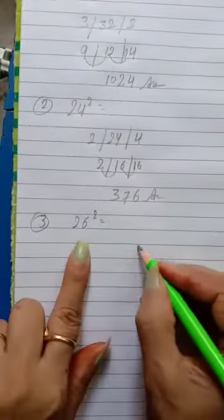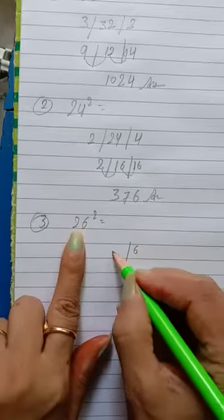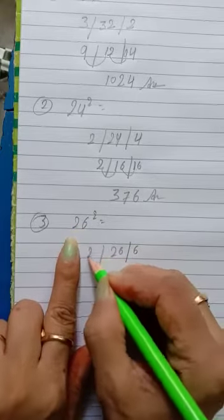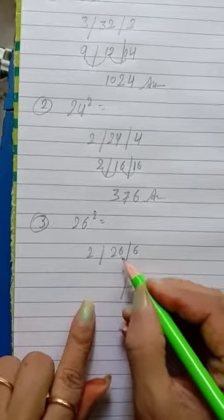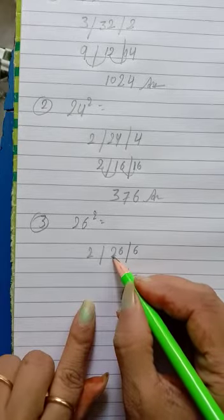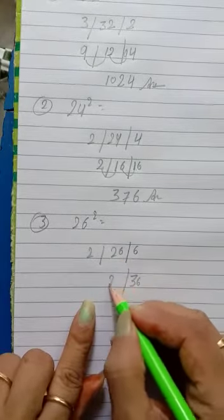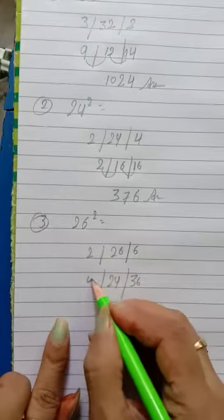First we have to separate 6, then 26 both digits, then 2. Now 6 times 6 is 36, then 6 times 2 is 12, 2 times 6 is 12, 12 plus 12 is 24. Then 2 times 2 is 4.